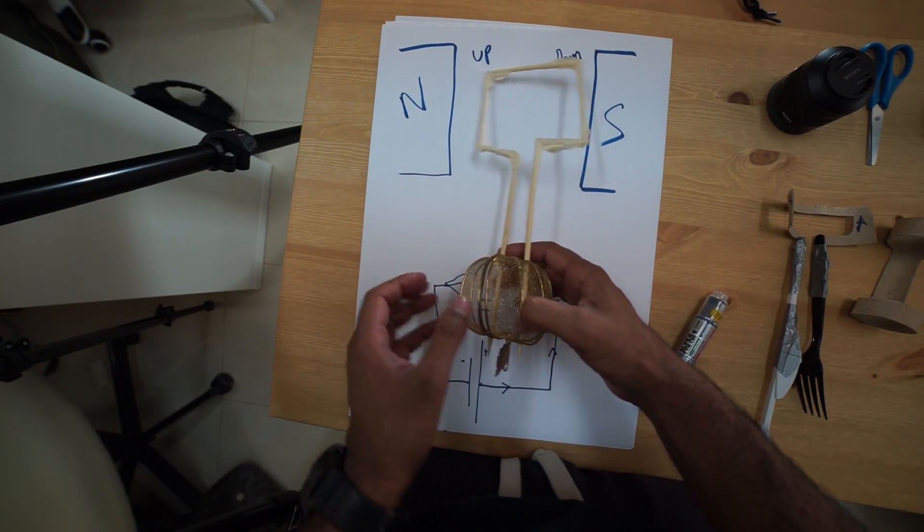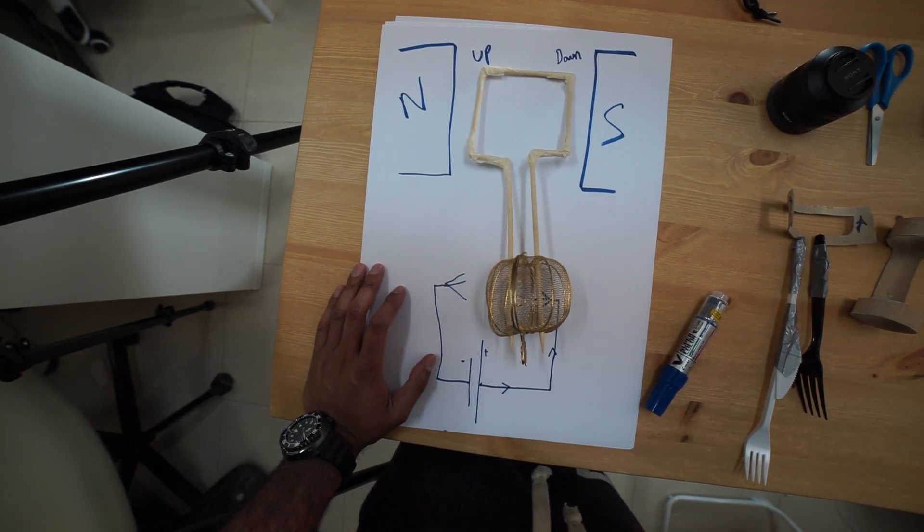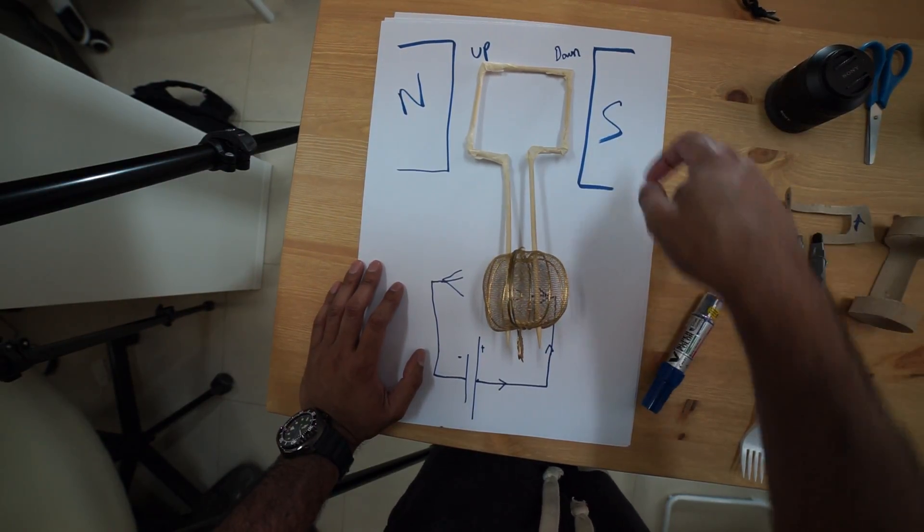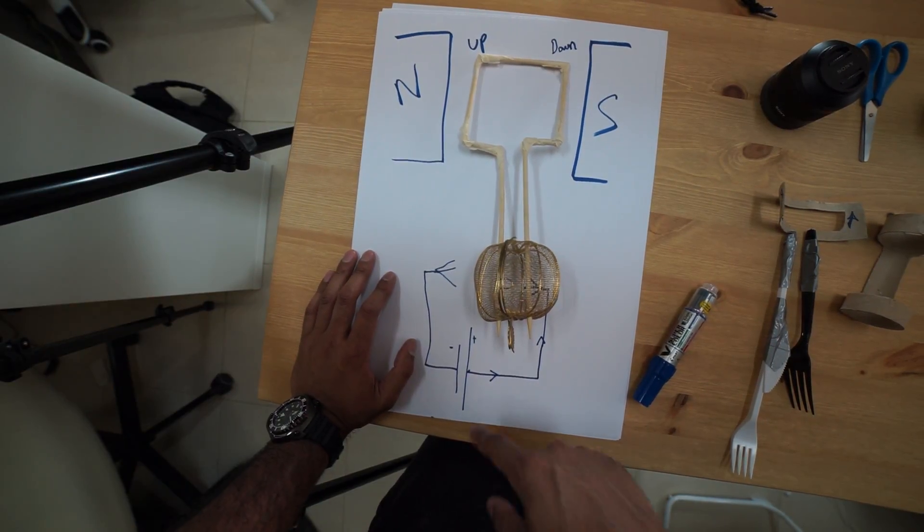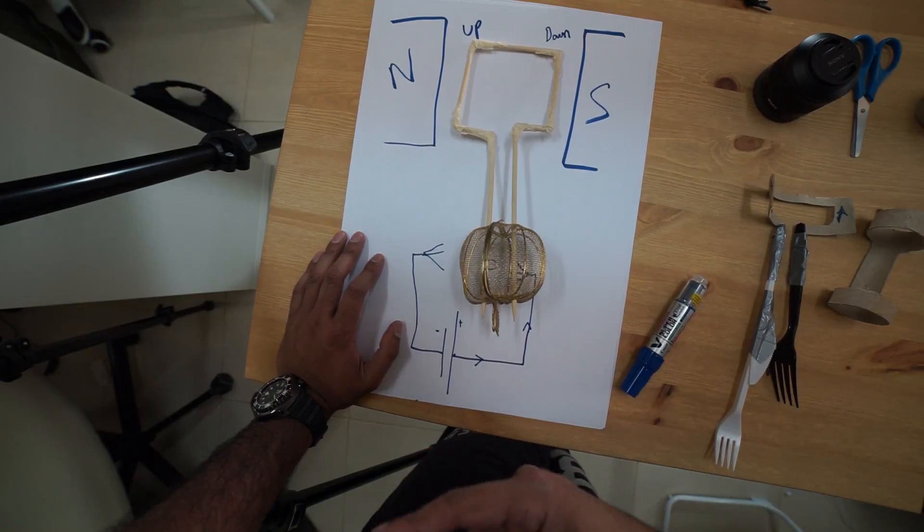The ways in which we can make it stronger: first of all, have more turns in the coil; secondly, a stronger magnet; thirdly, stronger current. So more turns in the coil, stronger magnet, stronger current—that's how you make it turn faster.